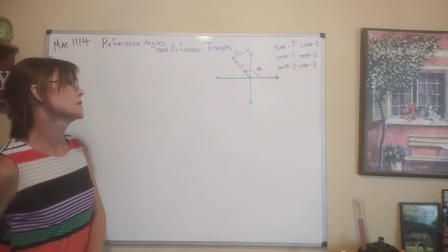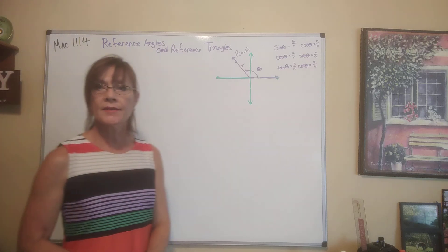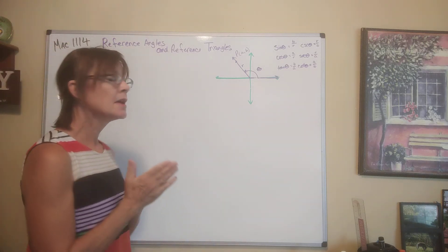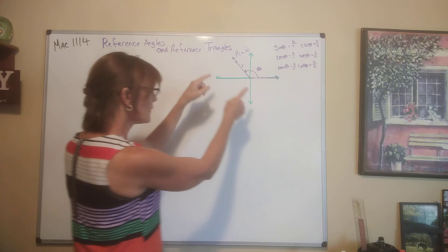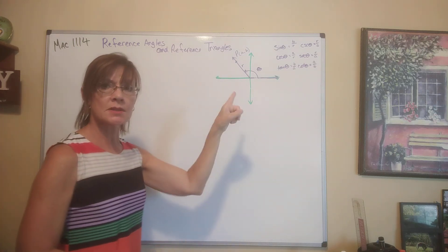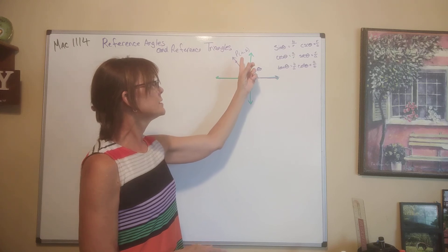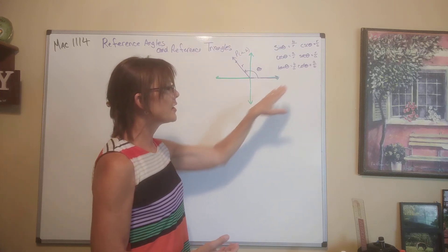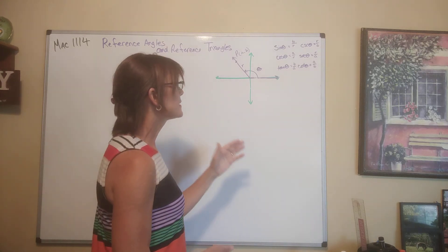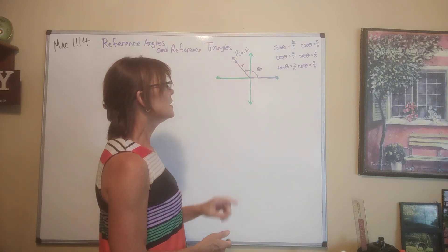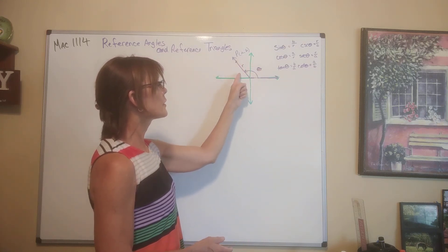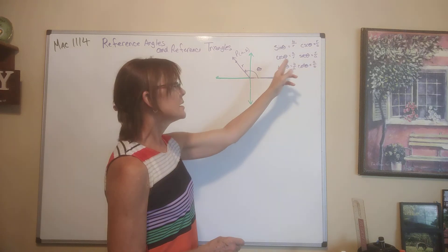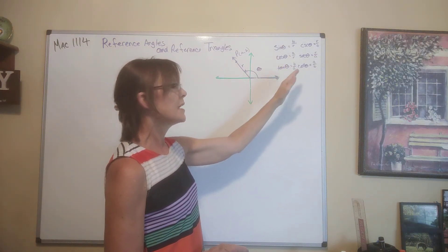Now we're ready for reference angles and reference triangles. We're going to start by looking at a definition for the six trig functions — where we have some angle in standard position that has a point on the terminal side of the angle, P, with the coordinates A, B. The sine of theta is equal to B over R, where R is the length to this point, cosine is A over R, and tangent is B over A.